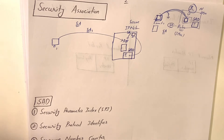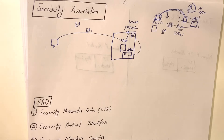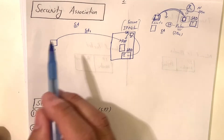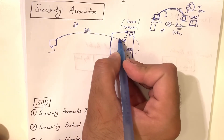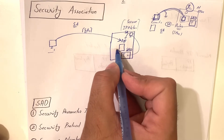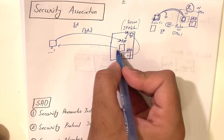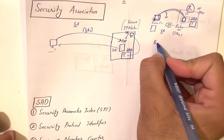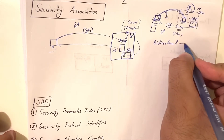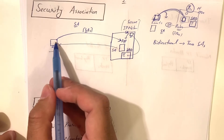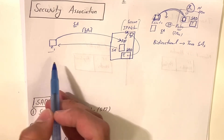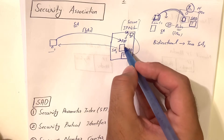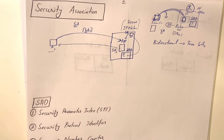Whoever wants to communicate with the secure network application must create a security association. This security association is one-way. For bidirectional communication, two security associations are required — one for the client sending to the application, and another for the application responding back. The SAD — Security Association Database — holds all that data.